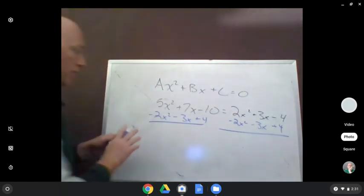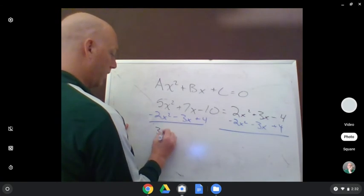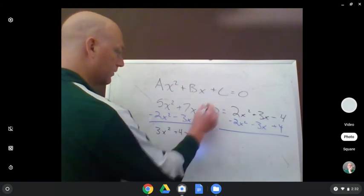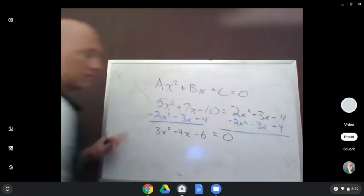And when I'm done, my result will be 3x squared plus 4x minus 6 equals 0.